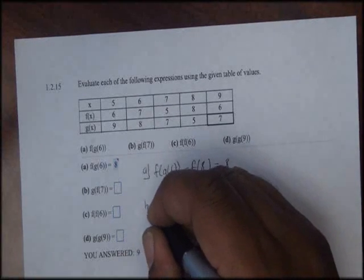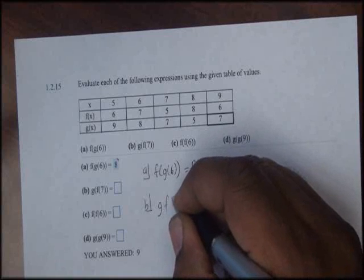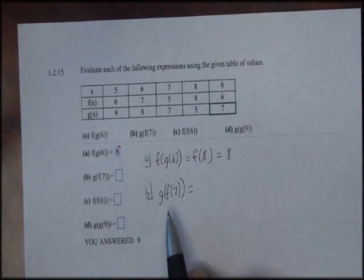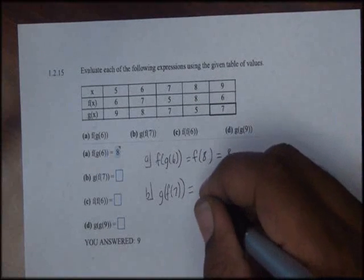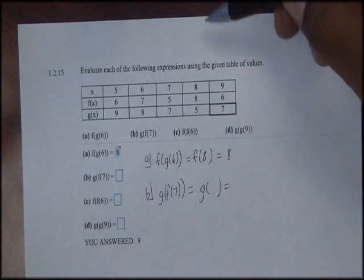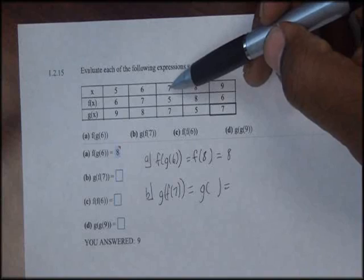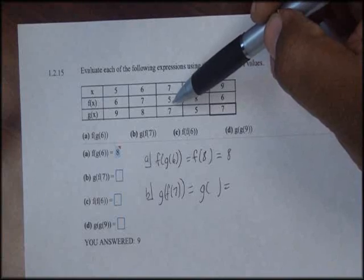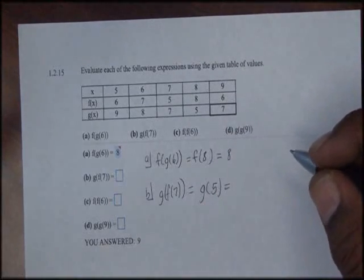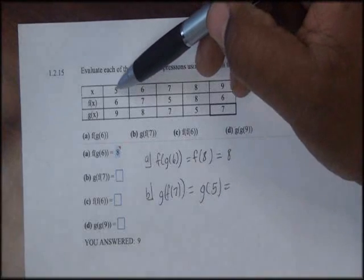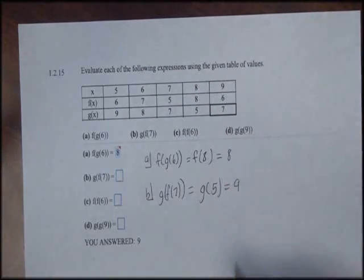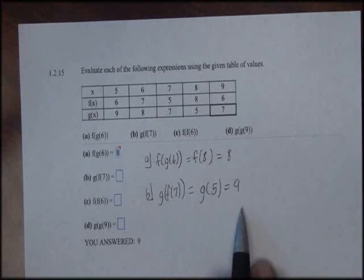In the next example we're asked to find g of f of 7. Once again I'll simplify the innermost set of parentheses. To find f of 7, I take the domain value 7 and insert it into the f of x function and it returns a 5. Next I'll find g of 5 by taking the domain value 5 and inputting it into the g of x function, and it outputs a 9. Therefore g of f of 7 is equal to 9.